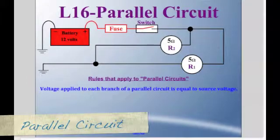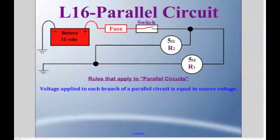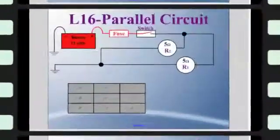Voltage applied to each branch of a parallel circuit is equal to source voltage. We need an Ohm's Law pie chart.